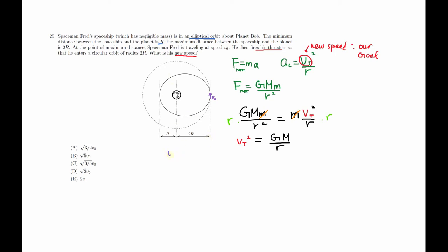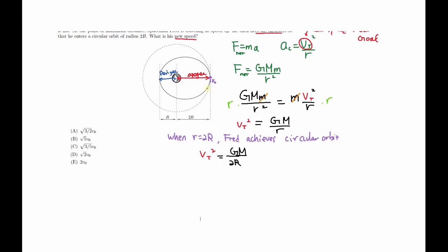When r becomes 2r, Fred achieves the circular orbit. I'll call the closest point to the planet the perigee, and the farthest point the apogee. So equation one is: v_t squared equals G·M over 2r. We'll come back to this equation, but first we also need to use conservation of angular momentum.